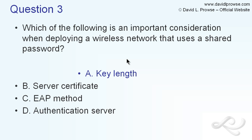Server certificates aren't necessarily going to be used with a shared password. Using a RADIUS server or something like that would take it to the next level beyond PSK. EAP methods are a completely different subject — if you're using 802.1x, you might use EAP for authentication, but it doesn't deal with a shared password. An authentication server similarly means you won't have a shared password; there'll be separate keys, passwords, and certificates. So key length is the answer for question three.